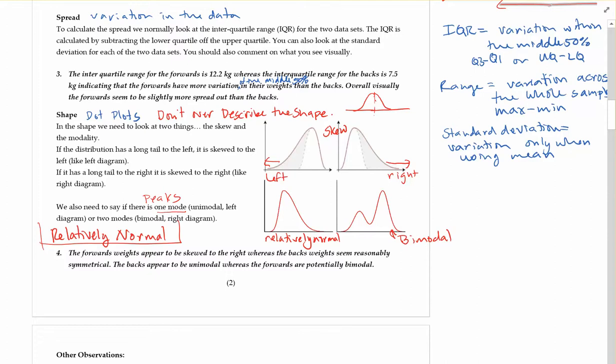So here the forwards' weights appear to be skewed to the right. So we saw that long tail off to the right. Whereas the backs' weights seem reasonably symmetrical. Or what I could say is relatively normal here. Or relatively normal with one peak in the middle there. And the backs also appear to be unimodal.